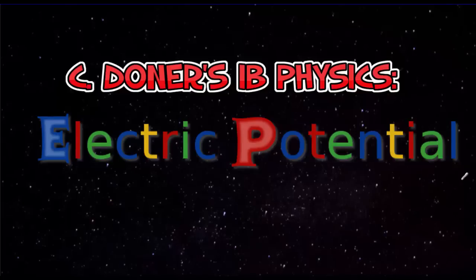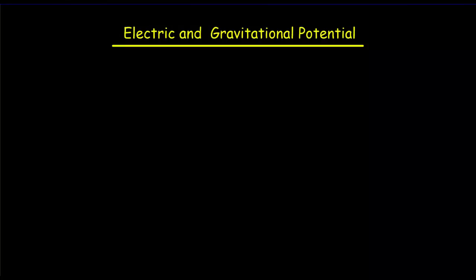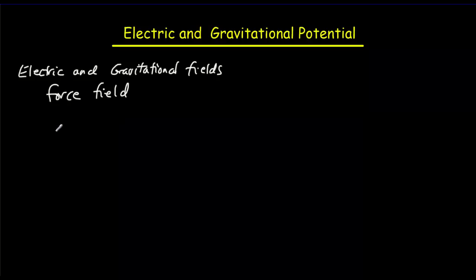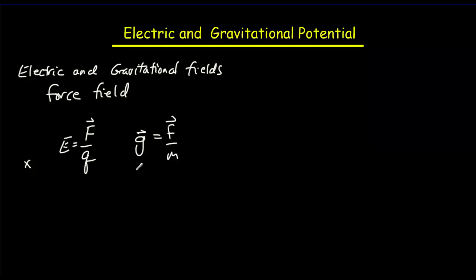Let's talk about electric potential. We have just been talking about electric and gravitational fields, and these fields were force fields. All we did was imagine bringing a test charge or a test mass to some point in space, and the force per unit charge acting on that test charge would equal the electric field. For the gravitational field, it would equal the force per unit mass — units of newtons per coulomb for the electric field, and newtons per kilogram for the gravitational field.